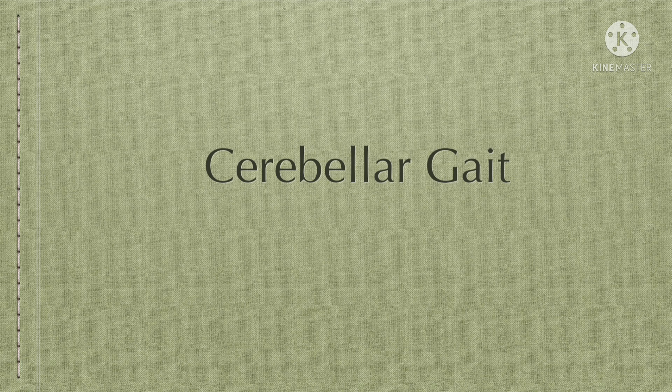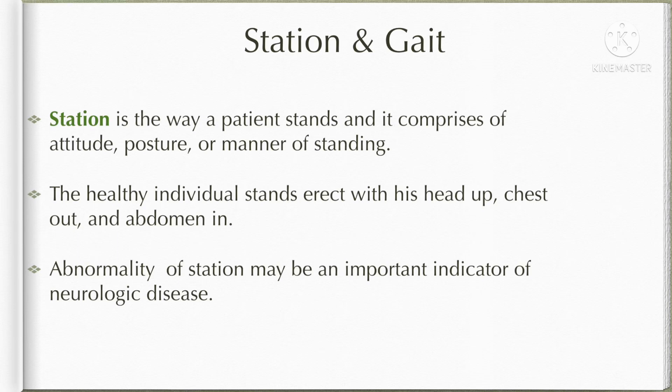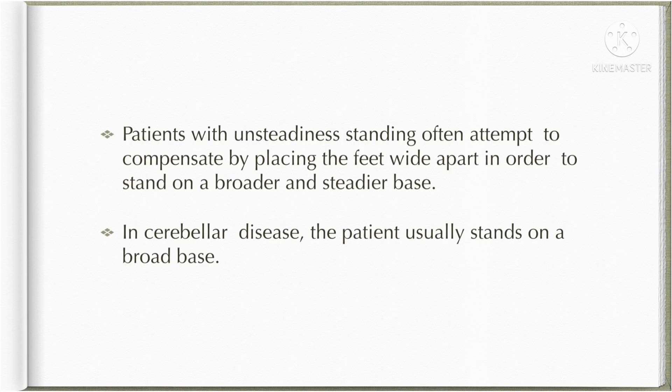Before talking about the Cerebellar Gait, let us first have a glance at Station and Gait in general. Station is the way a patient stands and it comprises of attitude, posture, or manner of standing. A healthy individual stands erect with the head up, chest out, and abdomen in. Abnormalities of station may be an important indicator of neurological disease. Patients with unsteadiness of standing often attempt to compensate by placing the feet wide apart in order to stand on a broader and steadier base.